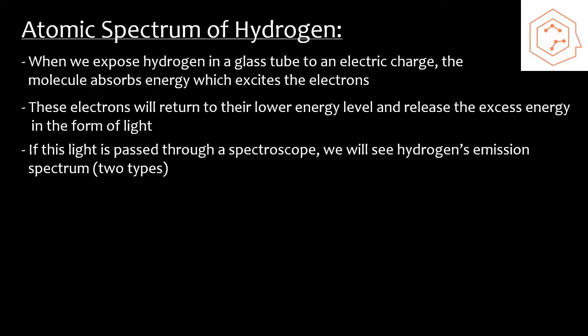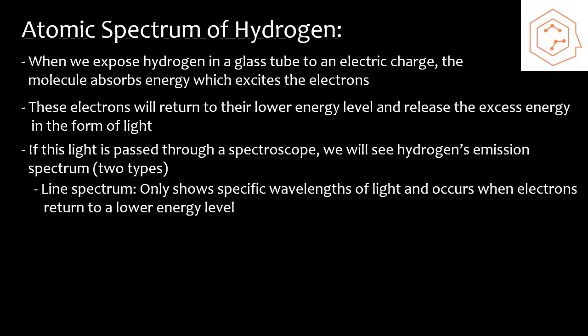There's two types of emission spectrums that we could expect. The first is a continuous spectrum in which all the wavelengths of light within a specific region are present, which is what we saw in the previous slide where we see all the colors fade into each other. However, a line spectrum, which is actually what we saw when we exposed hydrogen gas to this electric charge, only shows specific wavelengths of light. This occurs when these electrons return to a lower energy level.